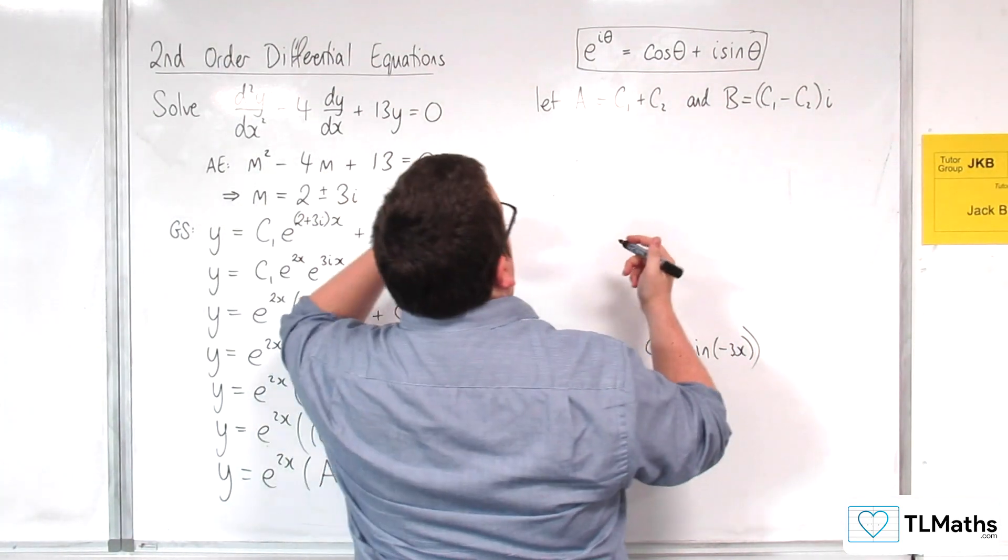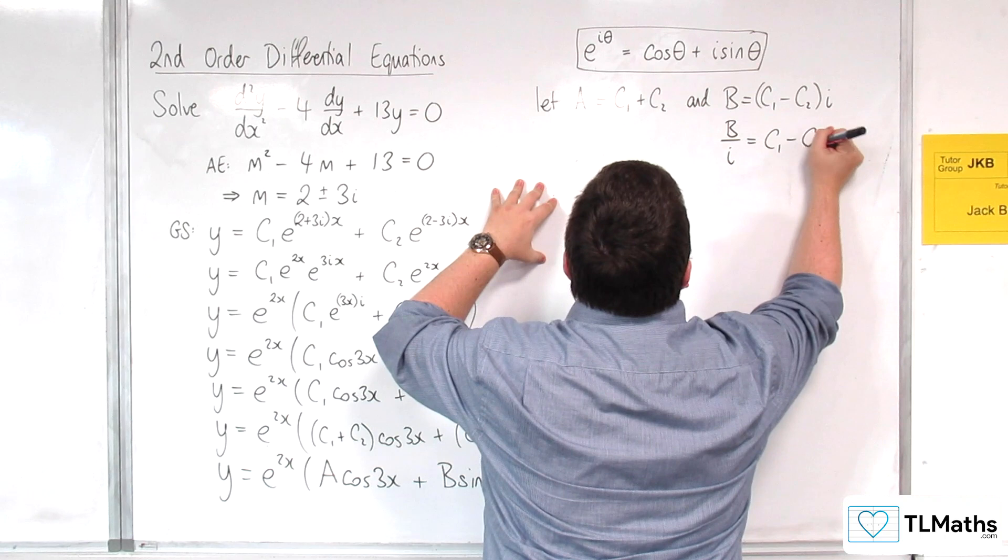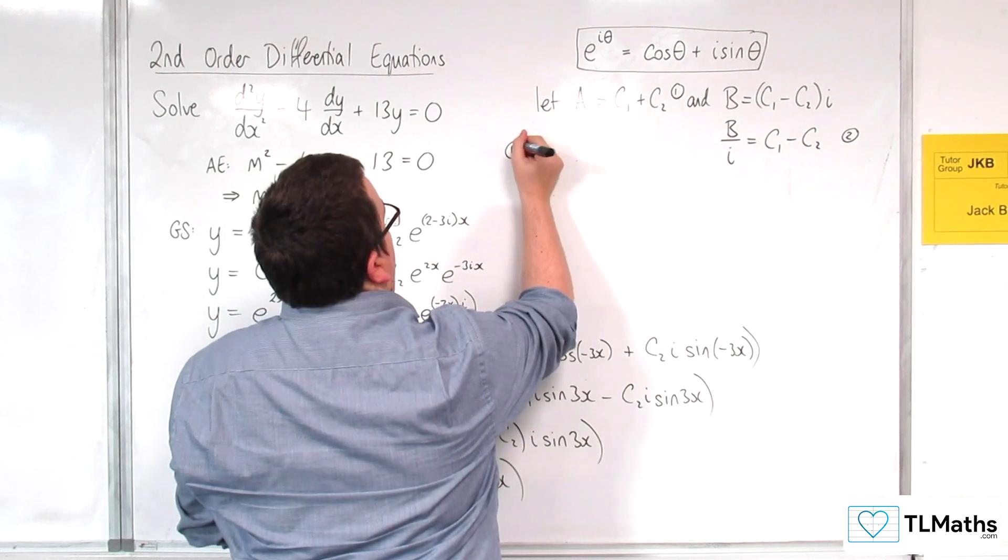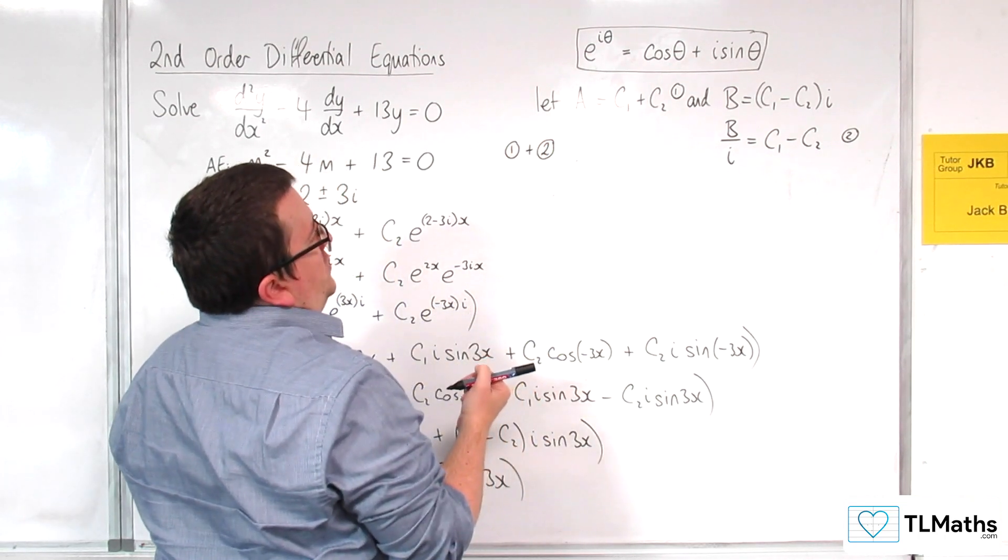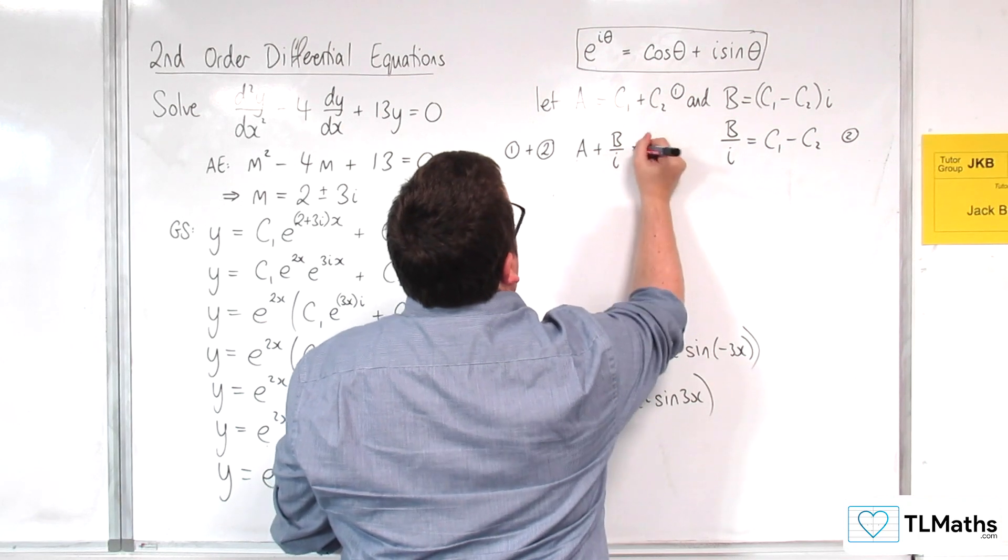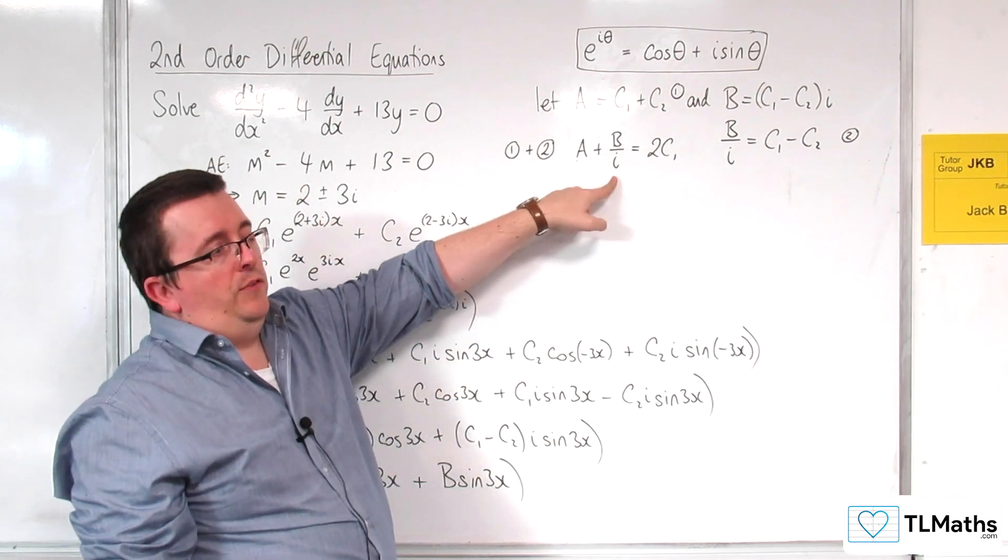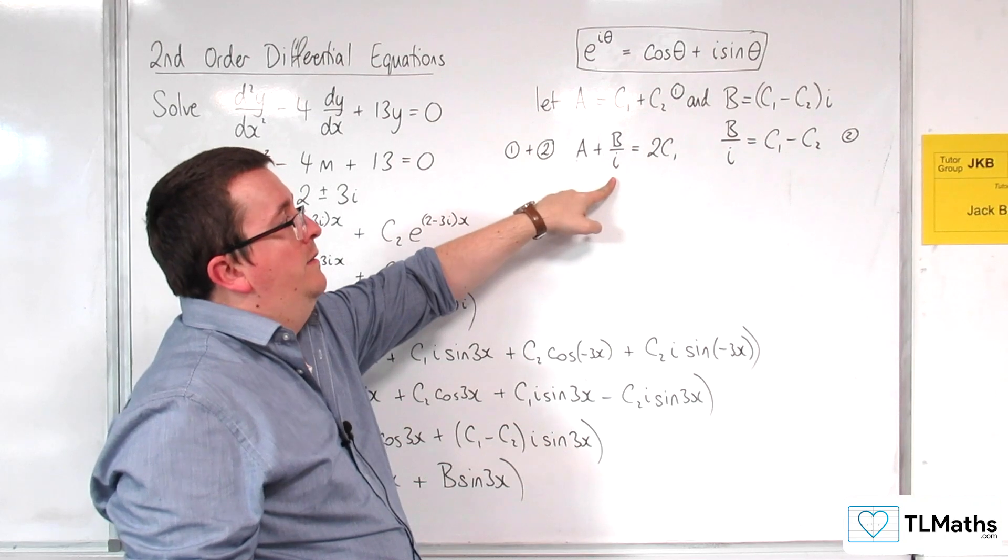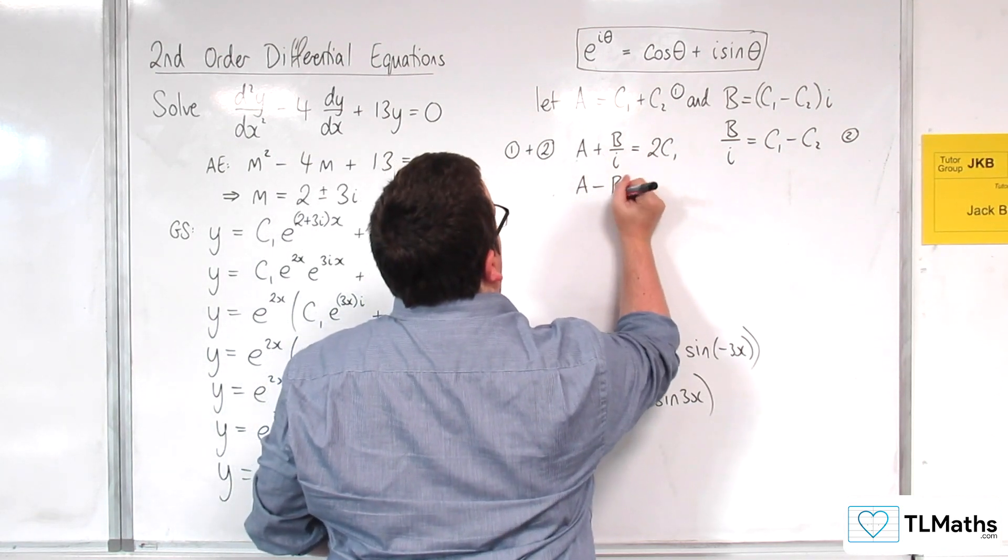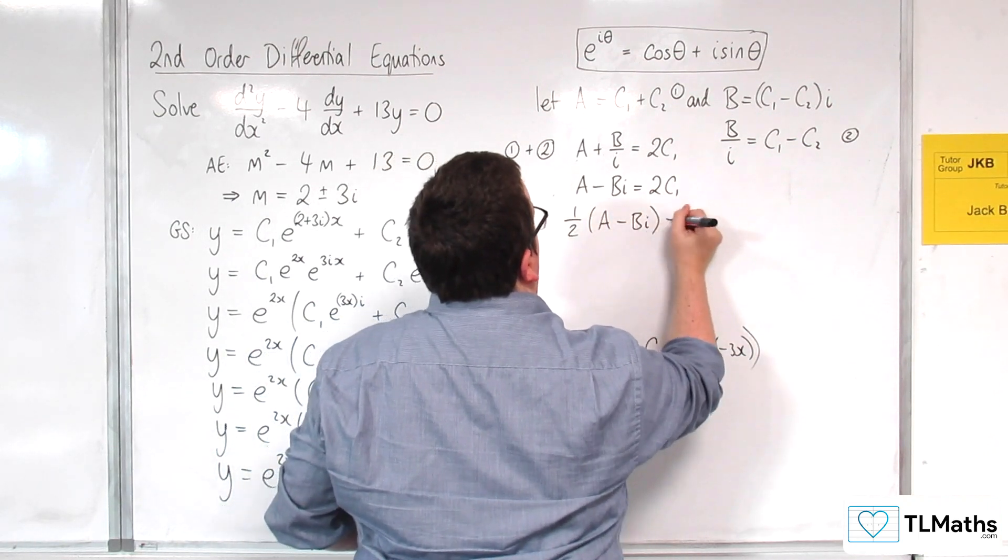So, what I could do is I could divide both sides by i here and have b over i is equal to c1 take away c2. And I could call that equation 1 and that equation 2. If I add together equation 1 and equation 2, it's going to knock out the c2s. They're gone. I'm going to have a plus b over i is equal to two lots of c1. Now, dividing by i is the same. I could just multiply top and bottom by i and I'll get bi over minus 1. So, that's minus bi. So, a minus bi is equal to 2c1. So, that means that half of a minus bi is equal to c1.